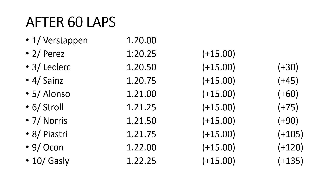After 60 laps, it's 60 times a quarter of a second — that's 15 seconds between each competitor. Fifth place Alonso is now 60 seconds off the leader after 60 laps. Verstappen can go around in 1 minute 20, Alonso in 1 minute 21. Verstappen's got a 60-second lead. Anyone further behind than 80 seconds has been lapped.